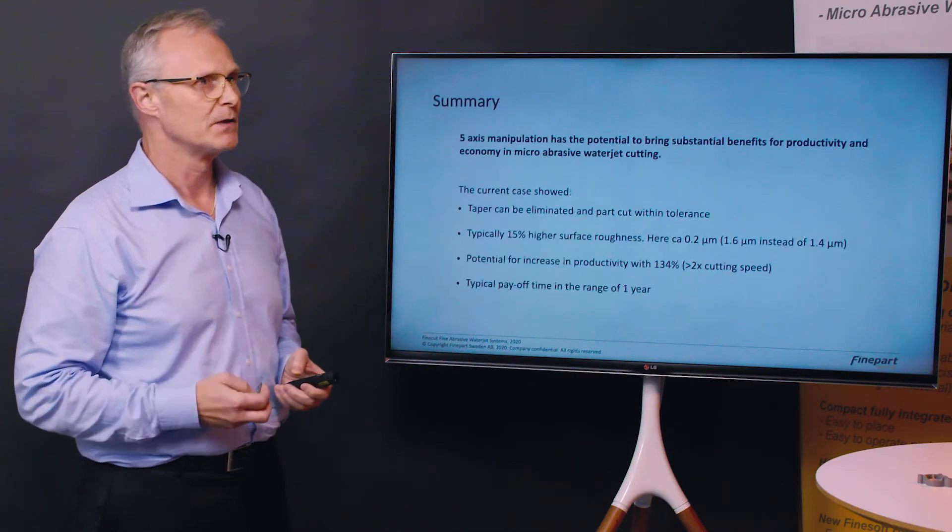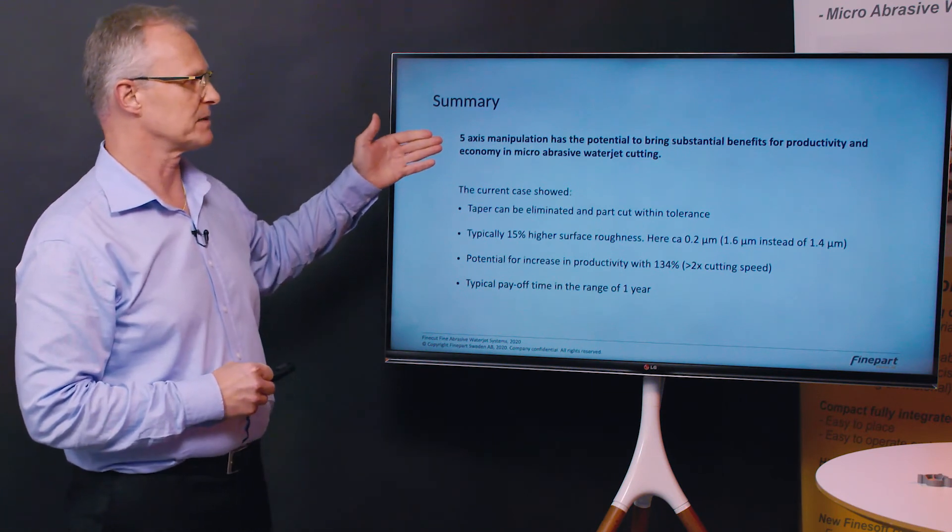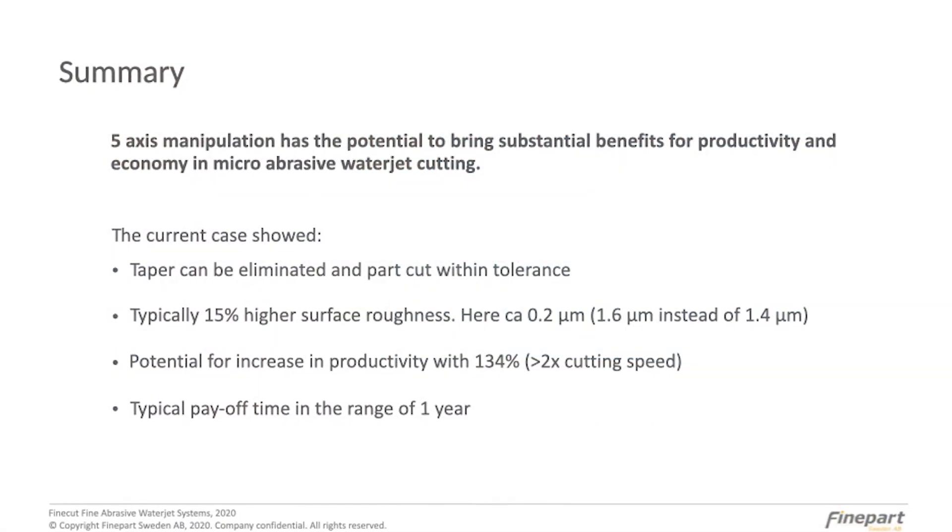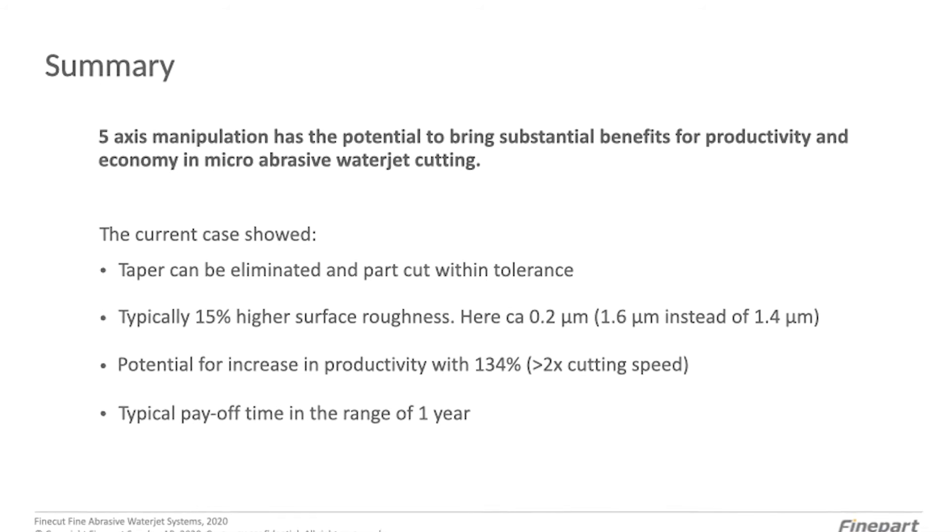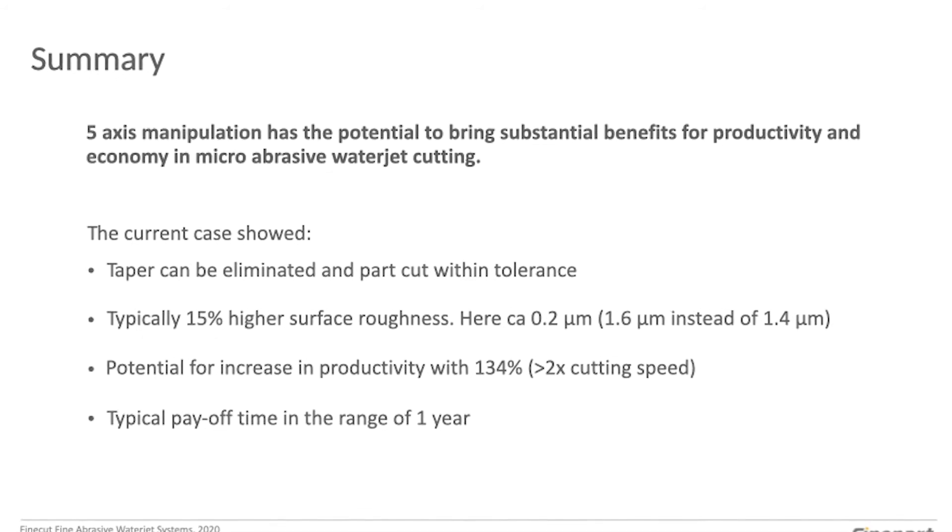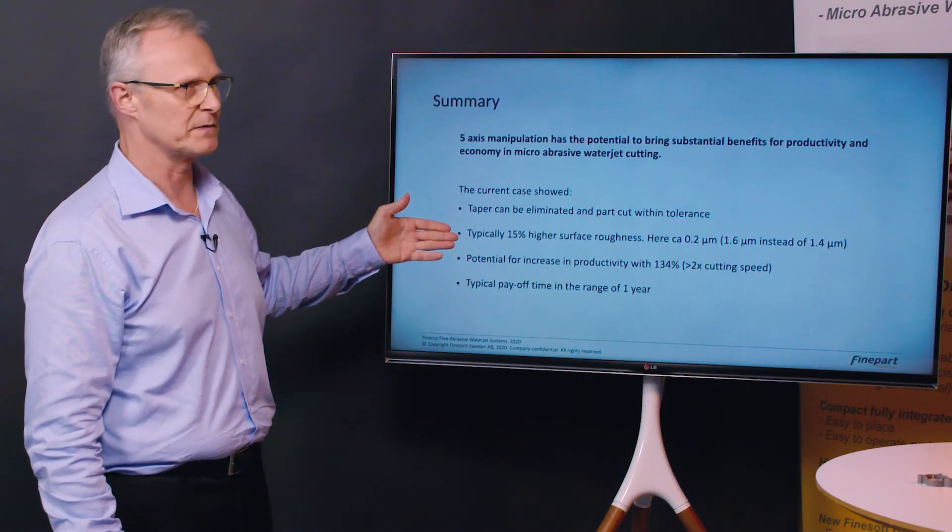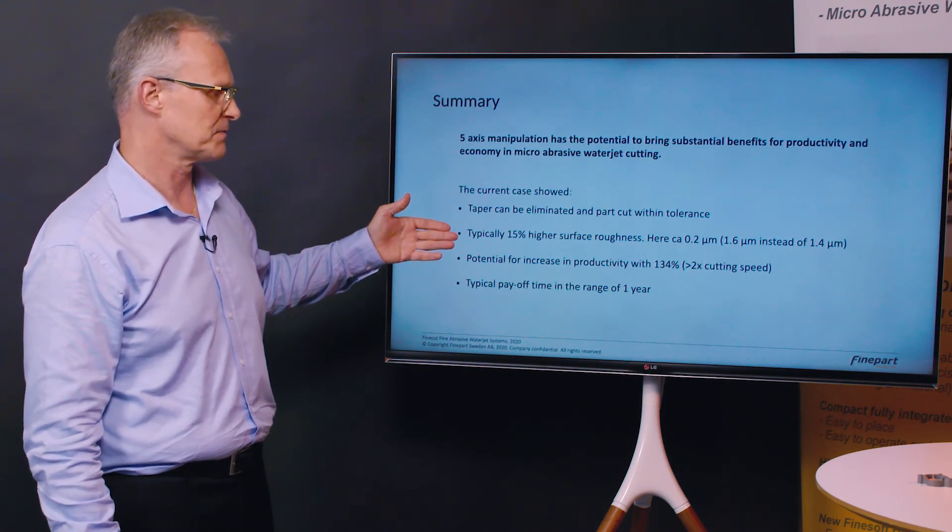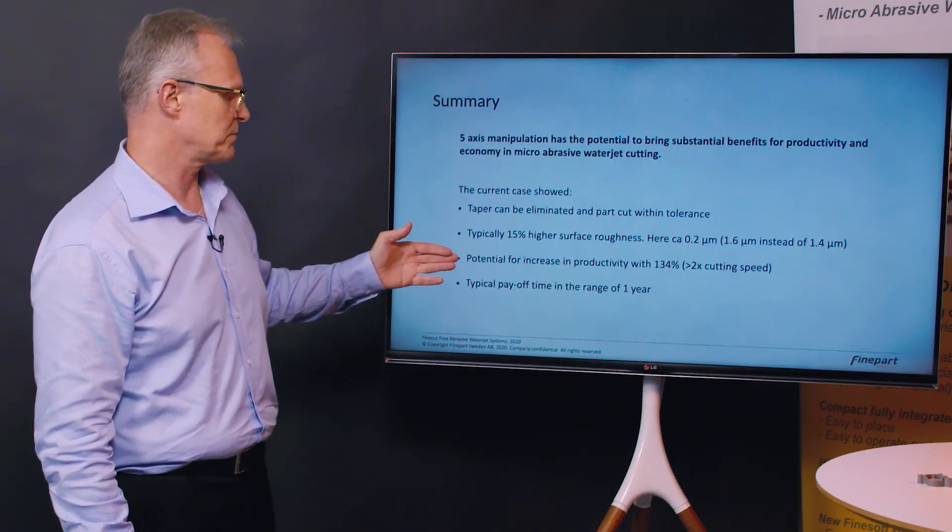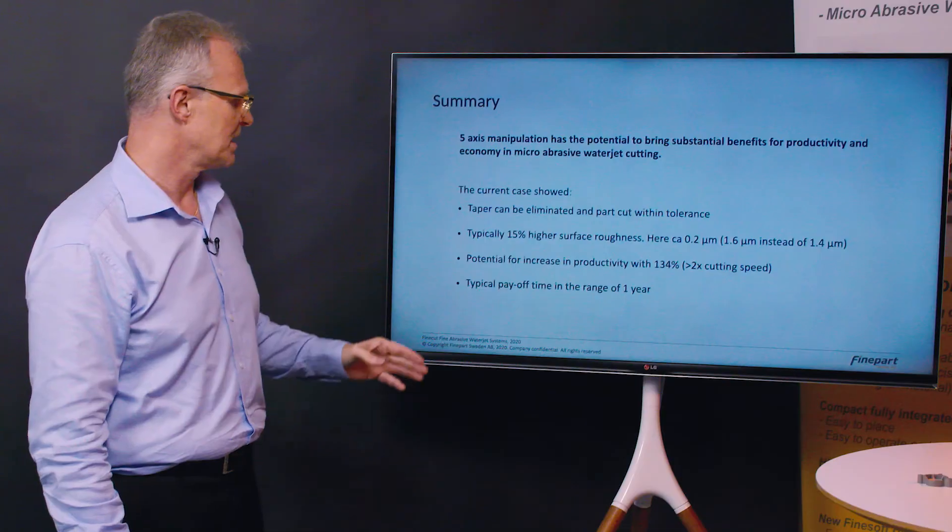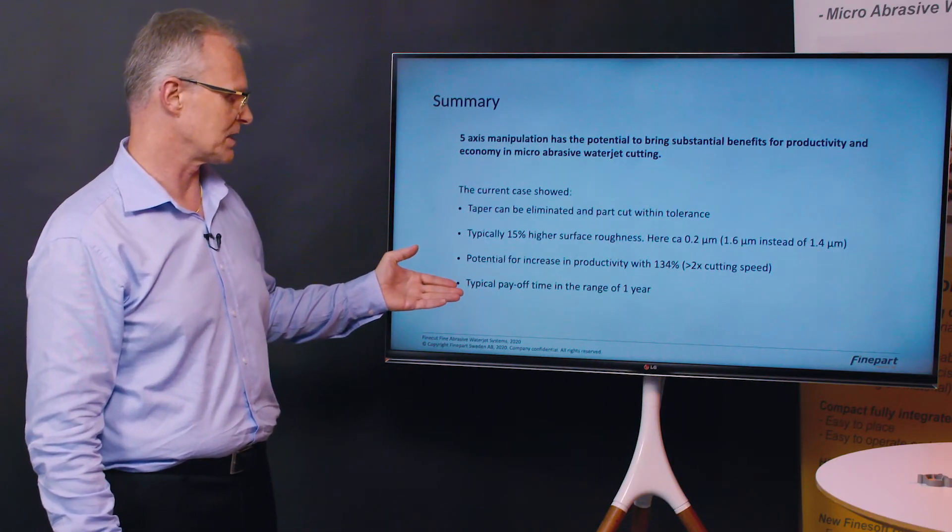To sum this up we can see that the five axis manipulation has the potential to bring substantial benefits for productivity and economy in micro abrasive waterjet cutting. In this current case it has shown that taper can be eliminated and parts can be cut within tolerance. We see that we get typically 15 percent higher surface roughness, here it's approximately a difference of 0.2 microns, and we have the potential for increasing productivity of 134 percent. We cut more than twice the cutting speed which gives us the opportunity to get the payoff time in the range of one year typically.